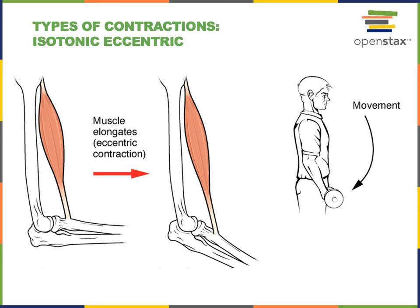Isotonic eccentric contraction is the other major subtype of isotonic contraction. Muscle tension remains constant, but the muscle lengthens during eccentric contraction. You can think of this as muscle braking, as the skeletal muscle produces tension less than the load, slowing down the movement. The example in the illustration is the biceps brachii performing eccentric contraction as the elbow joint is extended, slowing down that extension movement.